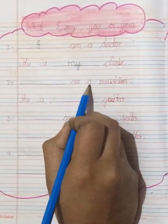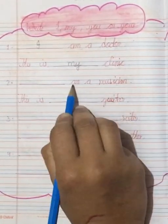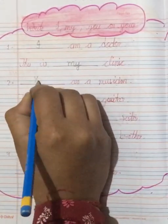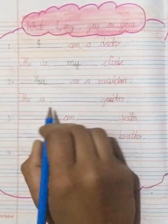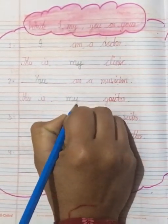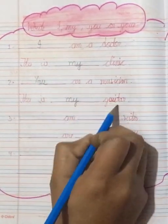Now next is are a musician. Dash are a musician. Toh kis ka use ho raha hai? R. Toh kya use karenghe? You are a musician. You are a musician. Now next is this is dash guitar. Toh kya use karenghe? This is my. Toh kis ka use karenghe? This is my guitar.